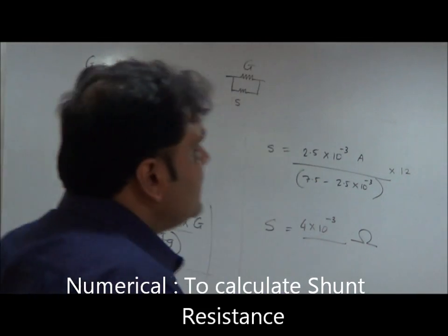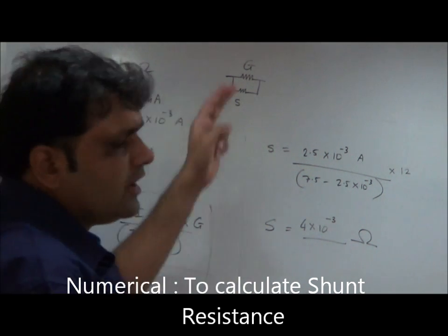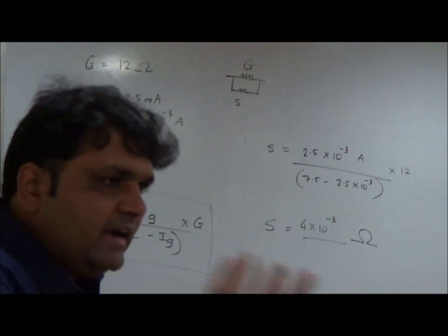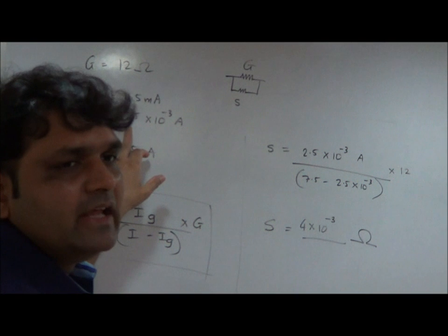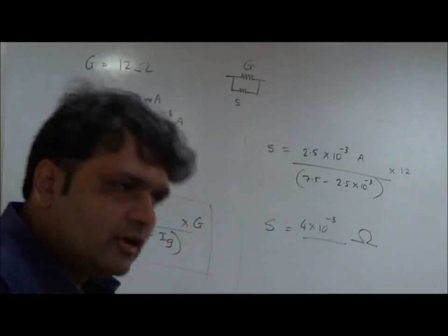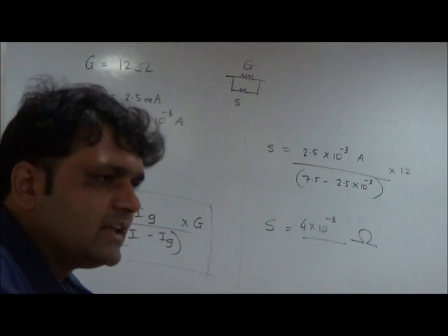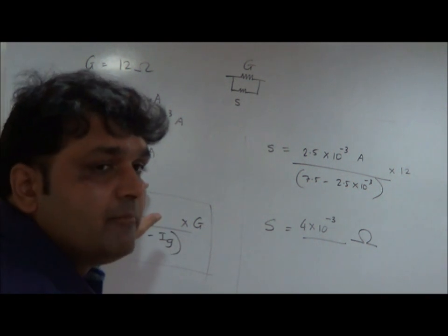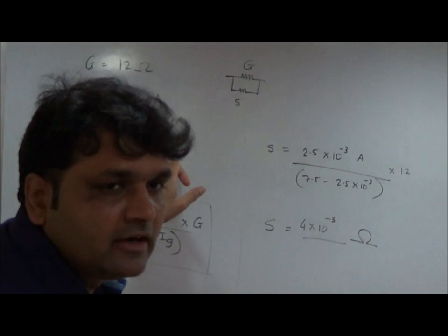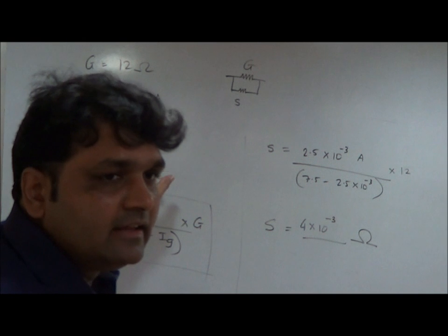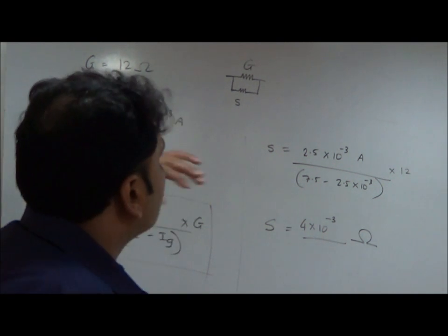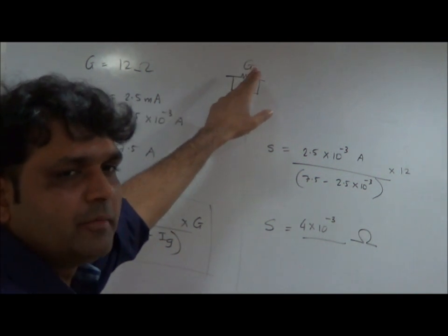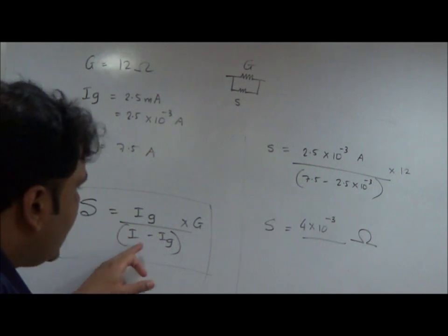Consider this situation: we have a galvanometer whose coil has a resistance of 12 ohm, and we want to convert it into an ammeter capable of measuring 7.5 amperes. The galvanometer by itself, without any modification, can allow a maximum of 2.5 milliamperes to pass through it — this is the full-scale deflection current, at which the needle deflects across the complete scale. The current to be measured, 7.5 amperes, is roughly 3000 times that. To convert it into an ammeter, we connect a low shunt resistance in parallel; the formula is S = (I_G × G) / (I − I_G).